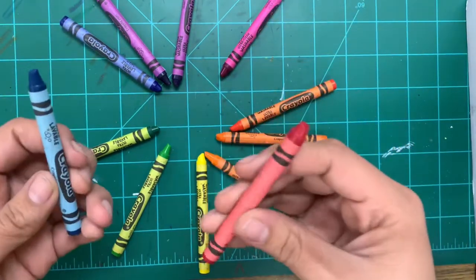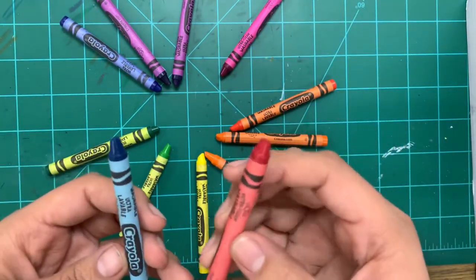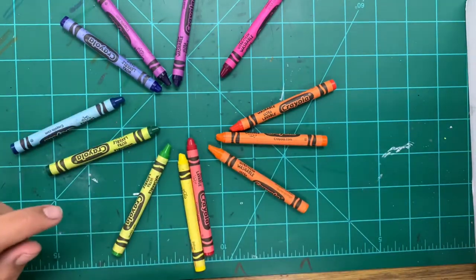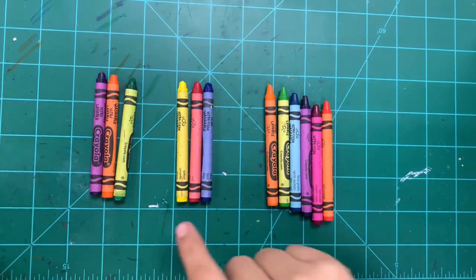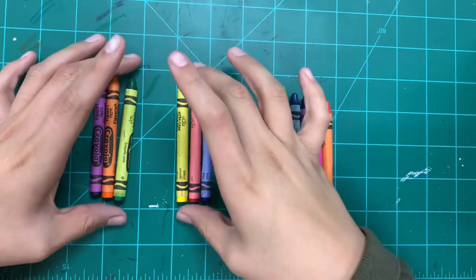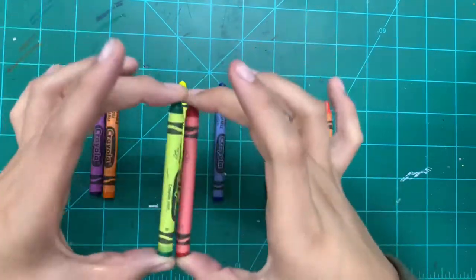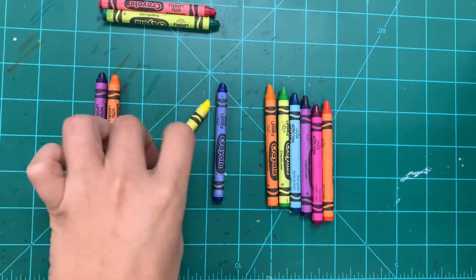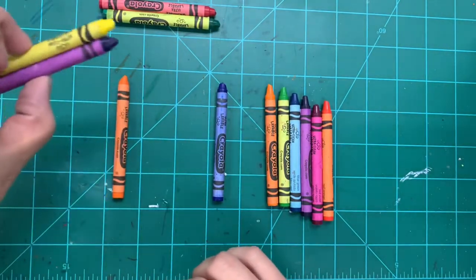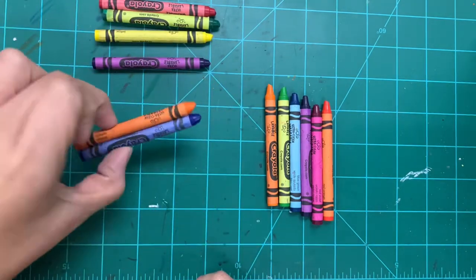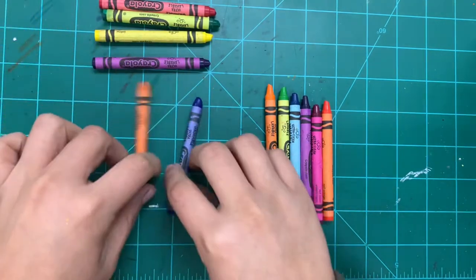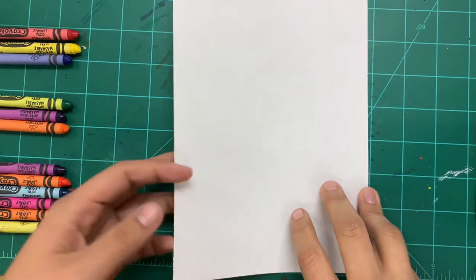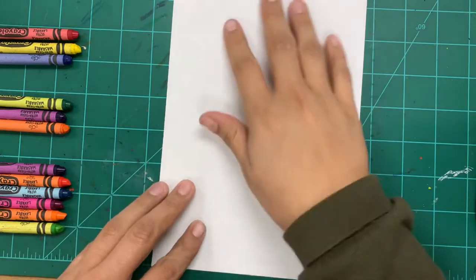And again, we're going to want to separate our tertiaries and our primaries. So you guys can go ahead and go back and set them up. And here real quick, I'm just going to go over our complementary colors. Our complementary colors are red and green, yellow and purple, and blue and orange.